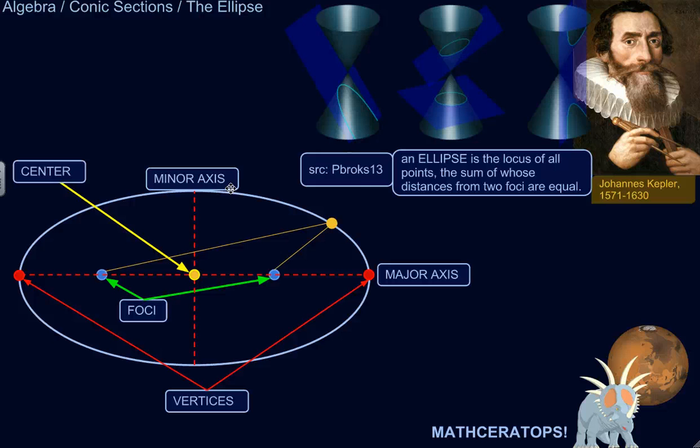So what's an ellipse? The ellipse is the locus of all points, the sum of whose distances from two foci are equal. What does that mean? Okay, so the foci, here are the foci of the ellipse. They're the two points that define the ellipse. Just like the circle, the center defines the circle, because the circle is all the points that are a certain distance away from the center.